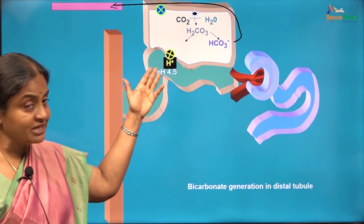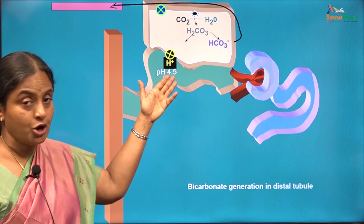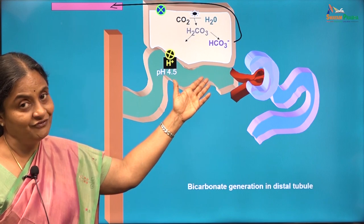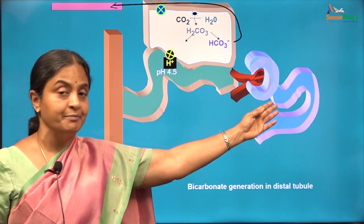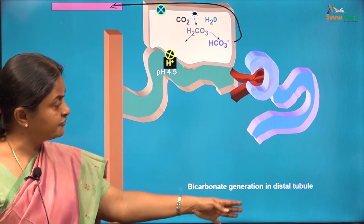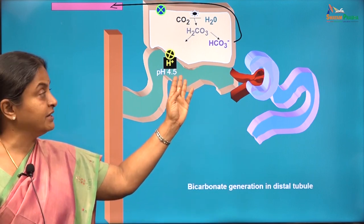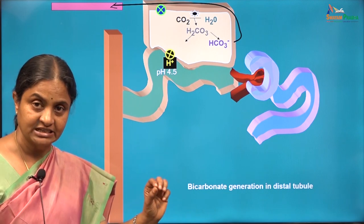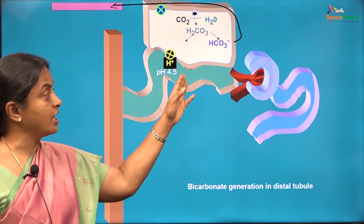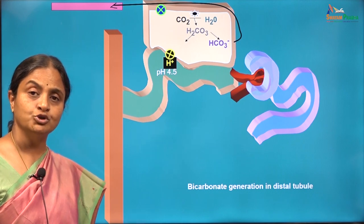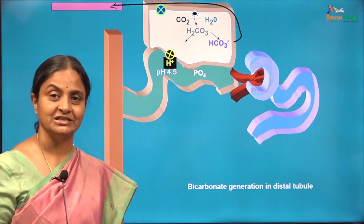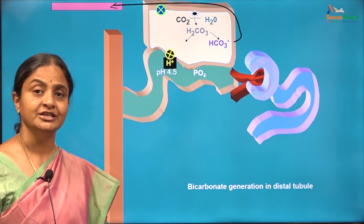If the proton pumps are to continue extruding protons without the pH dropping further, there must be a proton acceptor in the distal tubular fluid. In the proximal tubular fluid we had bicarbonate as the proton acceptor, but all the bicarbonate has been reabsorbed in the proximal tubule. Normally there is no bicarbonate that reaches the distal tubular fluid. So the proton acceptor in the distal tubular fluid is phosphate, and therefore phosphates are referred to as the urinary buffer.